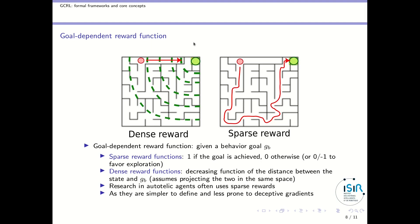Another important distinction in defining goal-conditioned RL problems is whether you use a dense or a sparse reward function. A sparse reward function generally outputs 1 if the goal is achieved and 0 otherwise, or 0 if achieved and -1 otherwise, which favors exploration. A dense reward function by contrast is generally a decreasing function of the distance between the state and the behavioral goal, and to define this distance you project either the state into the goal space or the goal into the state space.